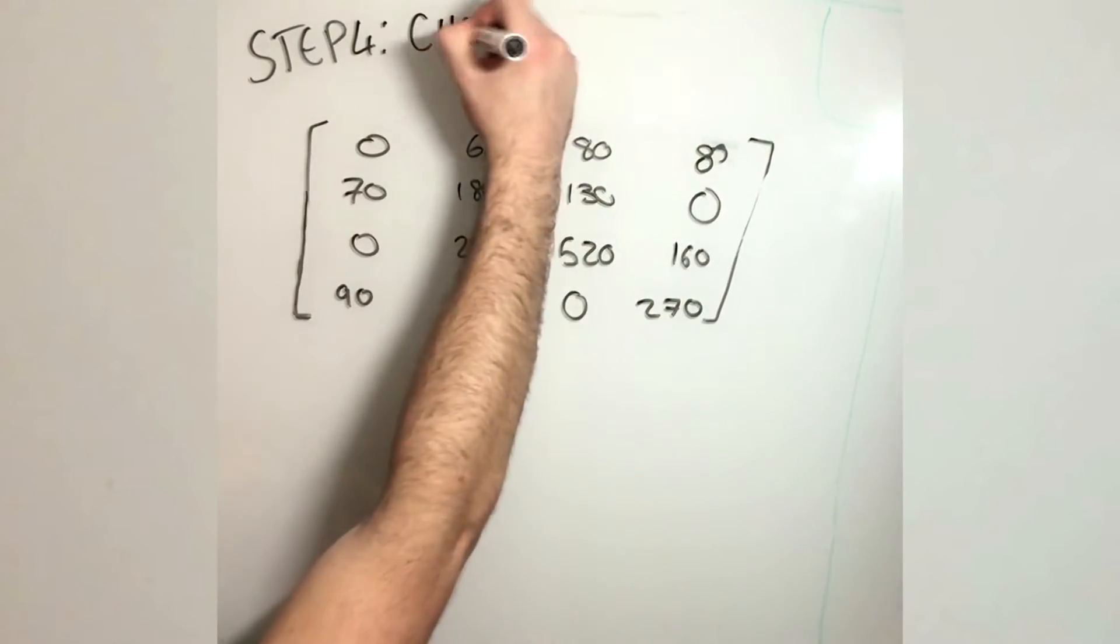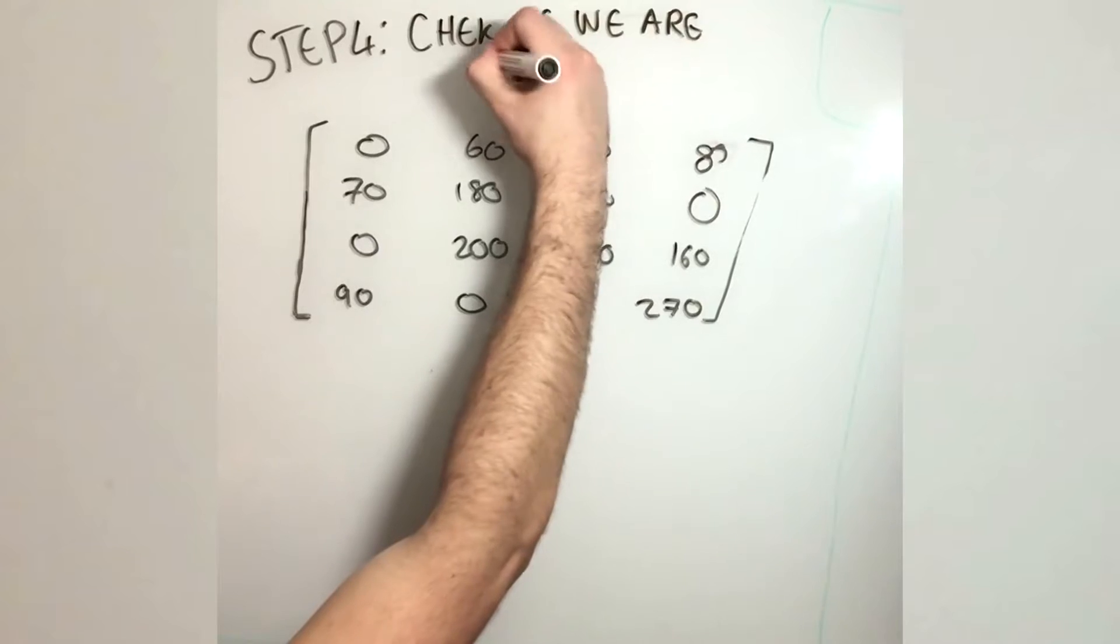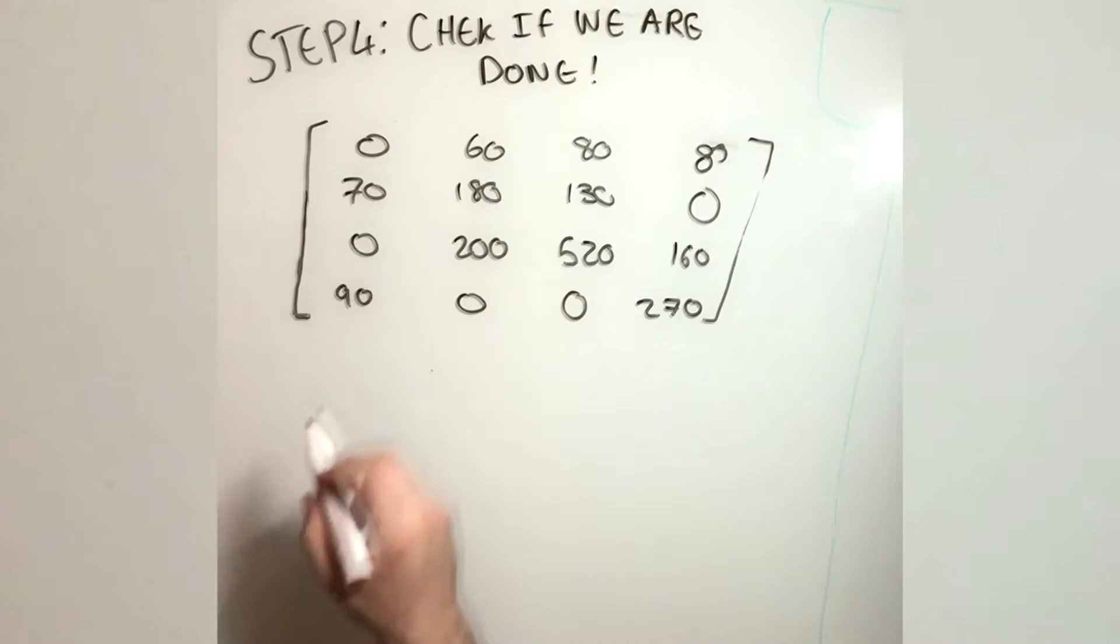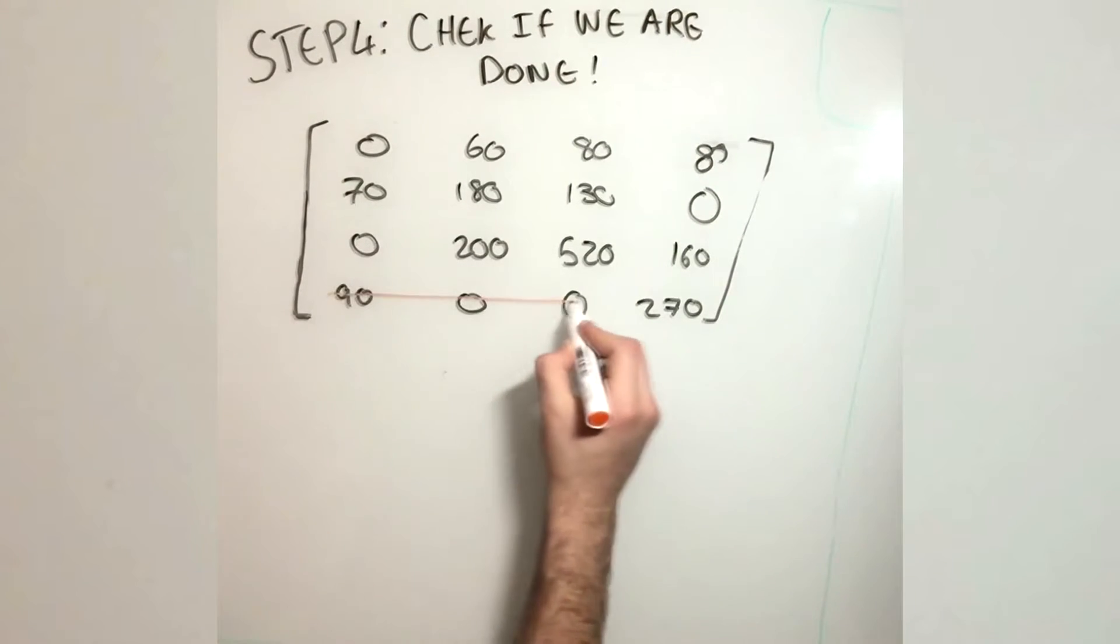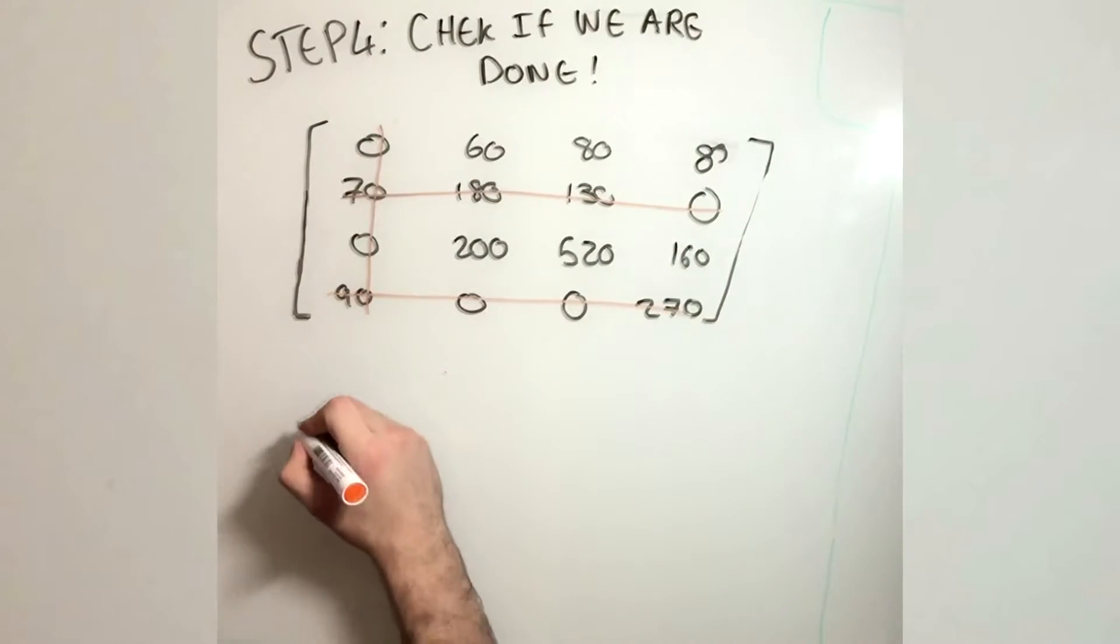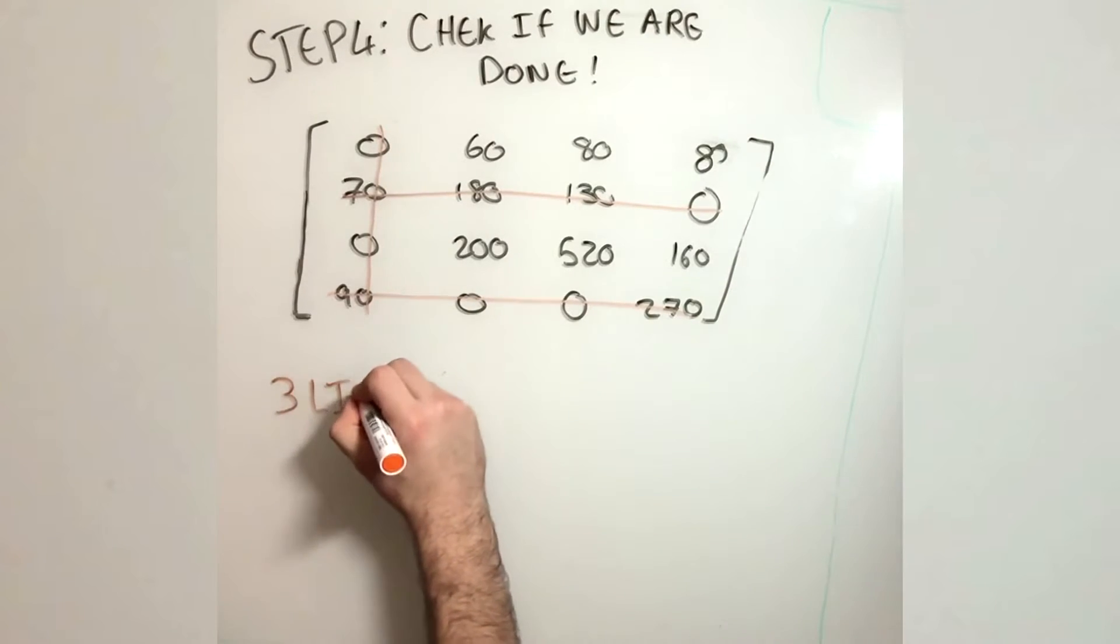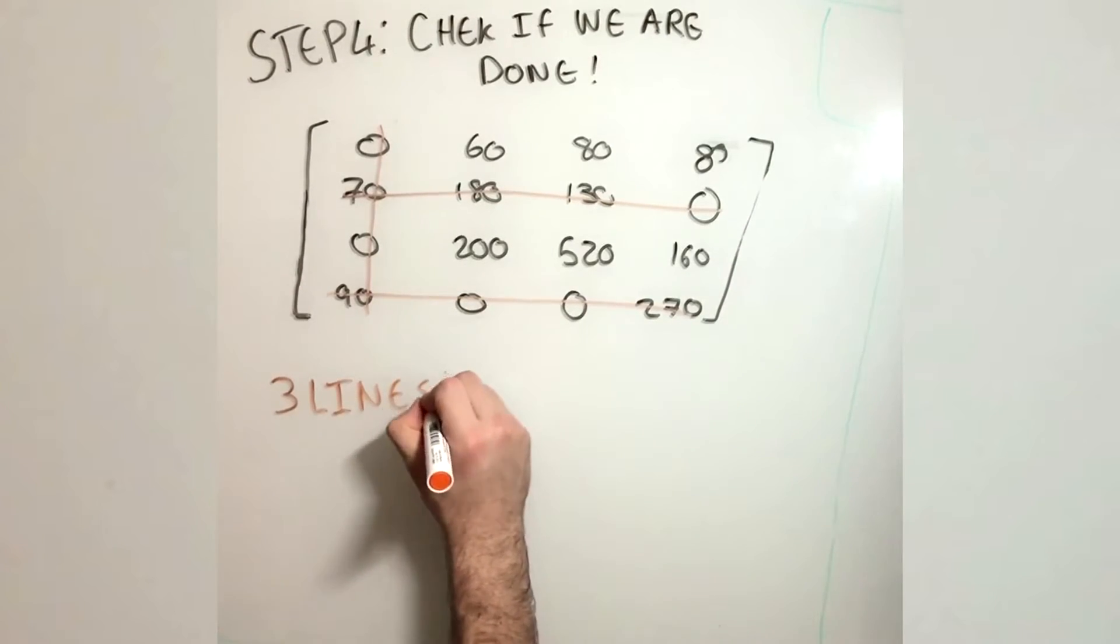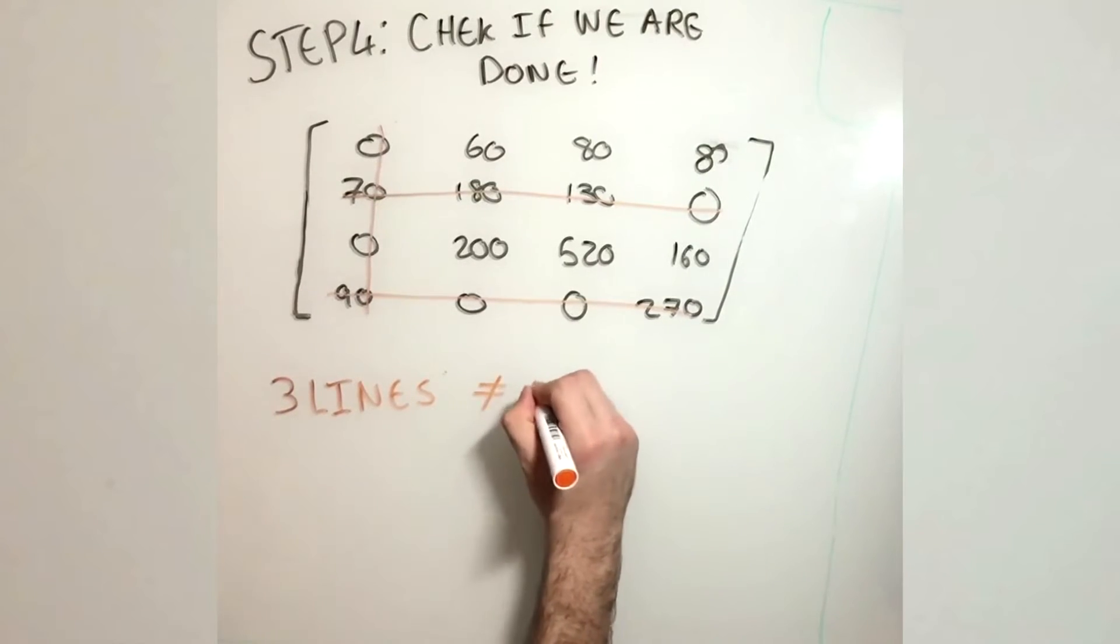Step 4 is to check if we are done. So now we need to put little lines as possible that go through the zeros and count the number of lines. So as you can see, we can draw three lines on our matrix. However, this doesn't equal to the number of N.